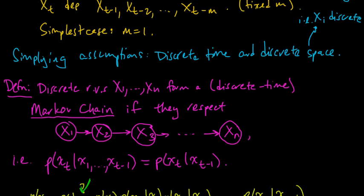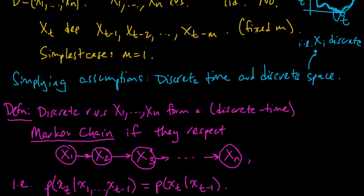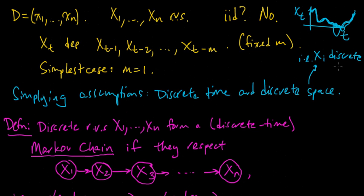In our earlier discussion, we noted that X_t could depend on the previous m random variables. What we've been looking at is just the simplest case where m equals 1.